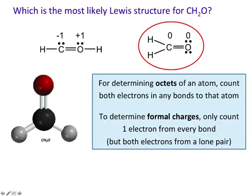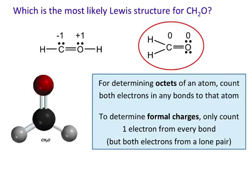So which is the most likely Lewis structure for formaldehyde? The structure with zero formal charges is preferred. The electrons are distributed in a way that doesn't give any formal charges to the atoms, and that's better. To highlight an important distinction: when you're determining octets, you count both electrons in any bonds to that atom. But when you're determining formal charges, you only count one electron from every bond — though you do count both electrons from a lone pair. That's very easy to mix up but very important.